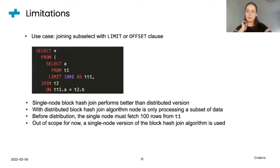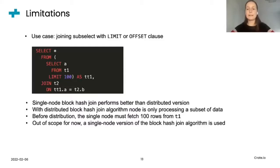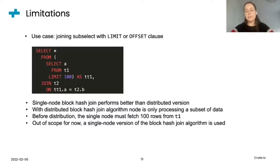During the implementation of the distributed block hash join algorithm, we identified one potential limitation. In the case where we try to join a subset that has a LIMIT or OFFSET clause as illustrated by the query, single-node block hash join performs much better than the distributed version. To implement this case, the distributed algorithm must first fetch 100 rows from T1 before distributing the rows to other nodes. This is not easy because each node is processing only a subset of data. As a result, we decided for now that this case is out of scope. In this situation, CrateDB uses the single-node version of the block hash join algorithm, which has better performance for this use case than its distributed version.